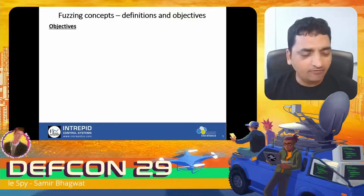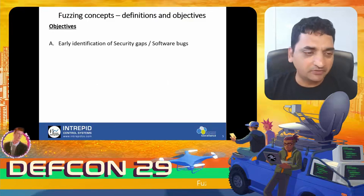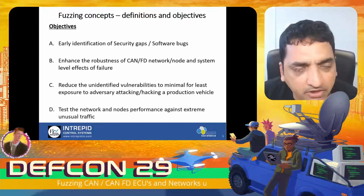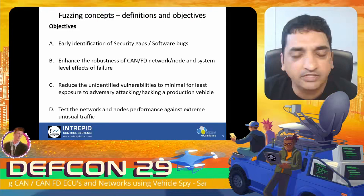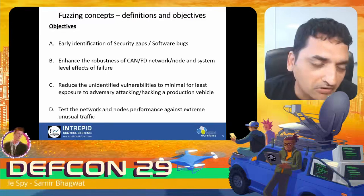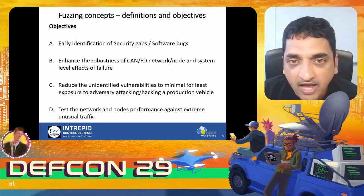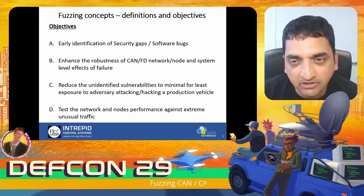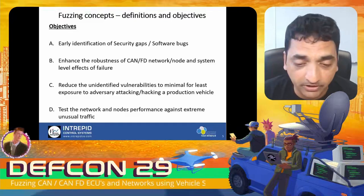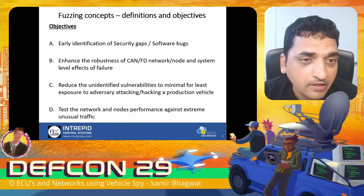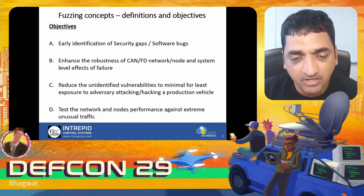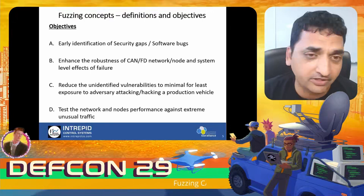Fuzzing in information technology has been prevalent for many years. With modern cars and complex ADAS and autonomous systems running millions of lines of safety-critical code, fuzzing is becoming extremely relevant for automotive manufacturers. My talk here will relate what it means for the automotive world to do penetration testing using CAN fuzzing.